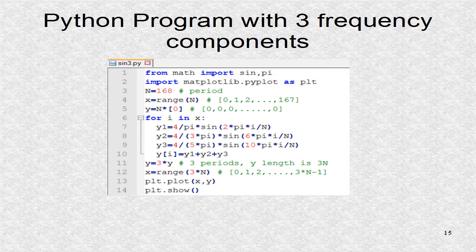Next is the python program for three Fourier coefficients. Now there are three sine terms with different frequencies, and three different Fourier coefficients. It should be noted, that there are no cosine terms in a square wave.